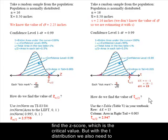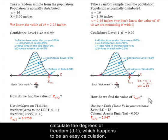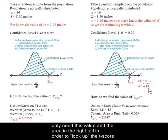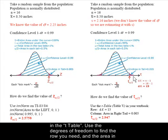But with the T distribution, we also need to calculate the degrees of freedom, which happens to be an easy calculation. Just subtract 1 from the sample size. So we have a degrees of freedom of 15. We only need this value and the area in the right tail in order to look up the T score in the T table.